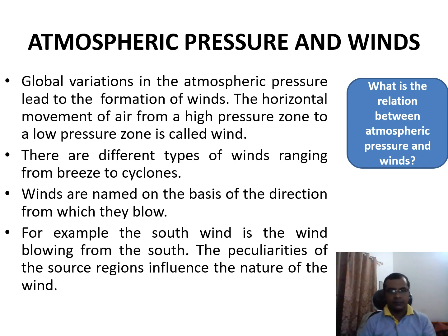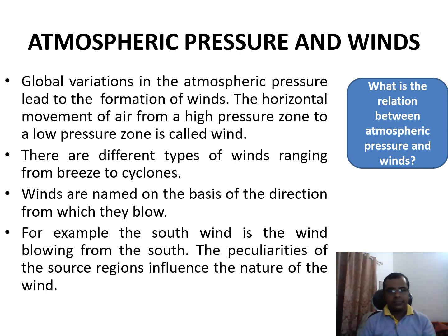Global variations in atmospheric pressure lead to the formation of winds. Winds are named on the basis of the direction from which they blow. For example, the south wind is the wind blowing from the south. The peculiarities of the source regions influence the nature of the wind.